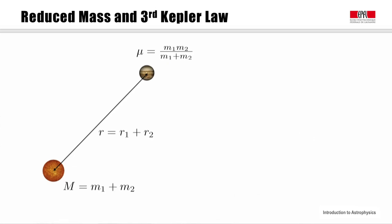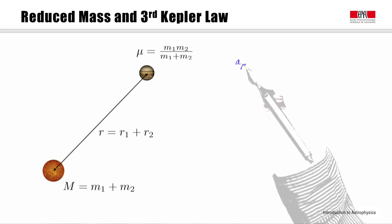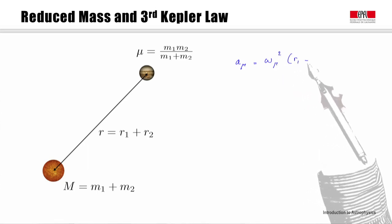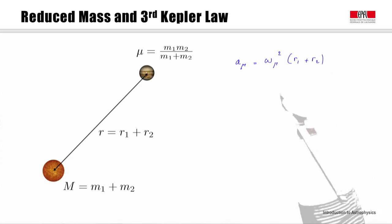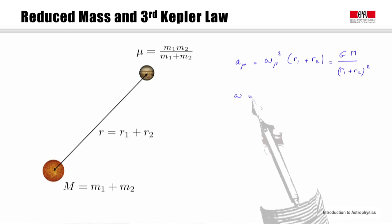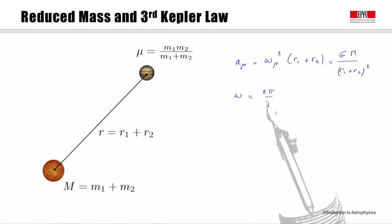Let us now consider the acceleration of the mass mu due to mass M, in the case of a circular orbit. We call it a_mu. It is equal to the angular velocity squared times (r1 + r2). According to Newton's law, it is also equal to GM divided by (r1 + r2) squared. On the other hand, omega is equal to 2pi over the orbital period, and we can thus substitute omega here.